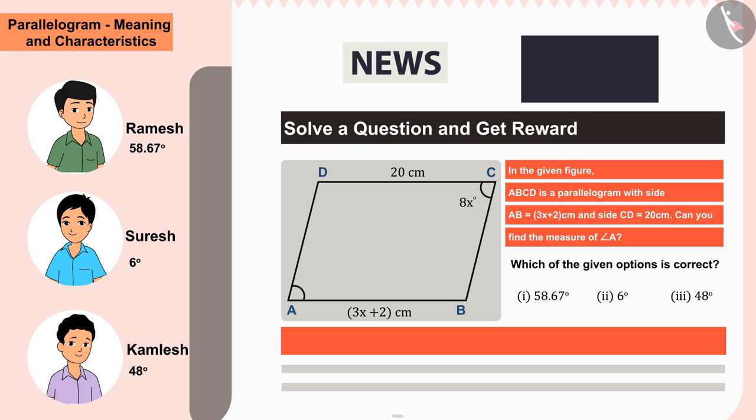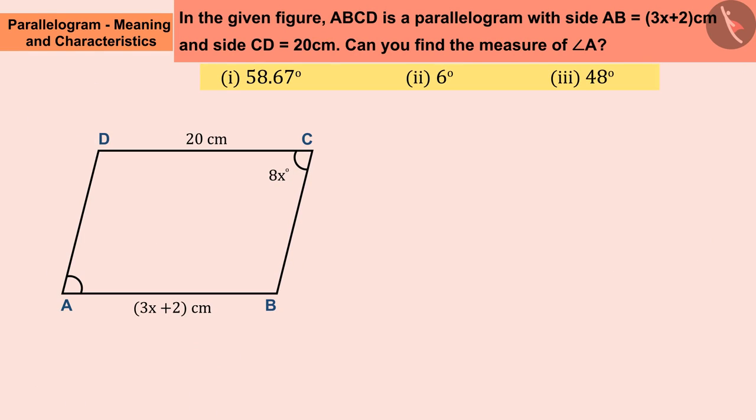Can you tell whose answer is right and why? As you can see, the angle C is equal to 8x degrees in the figure. How do we get the value of angle A using it? Well done! The value of angle A will also be 8x because the opposite angles of a parallelogram are of equal measure.